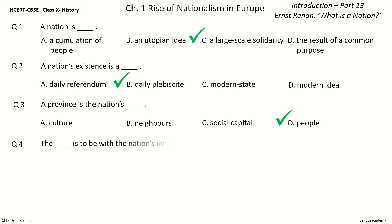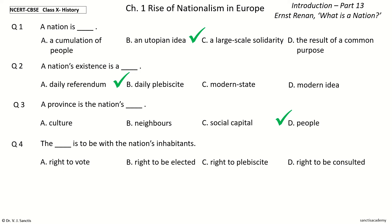Question 4. The dash is to be with the nation's inhabitants. The options are: right to vote, right to be elected, right to plebiscite, right to be consulted. The answer is the right to be consulted.